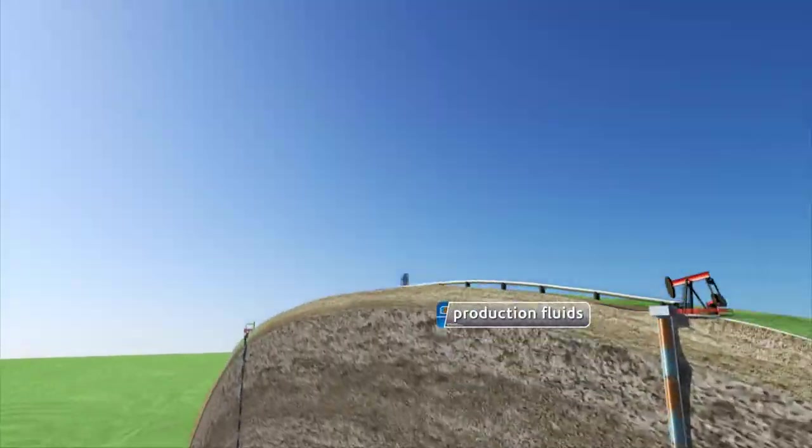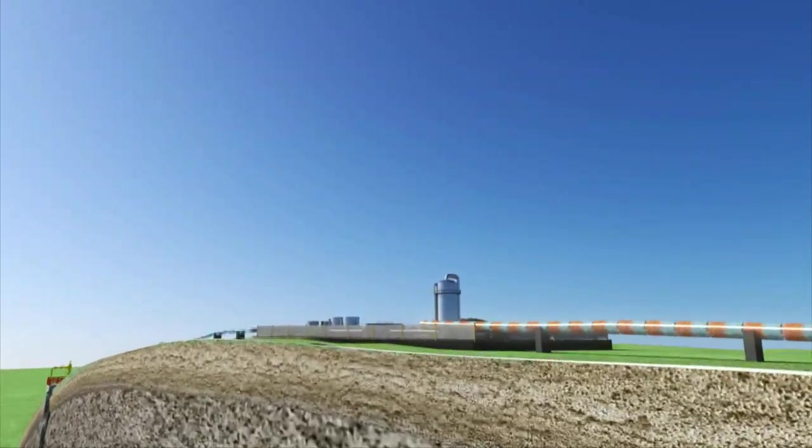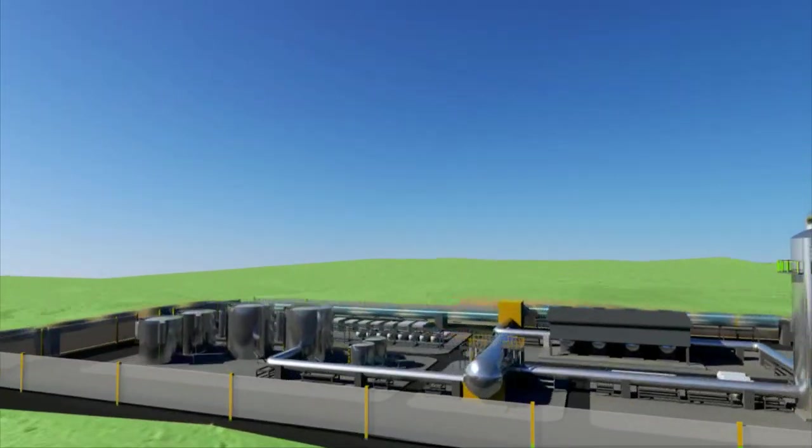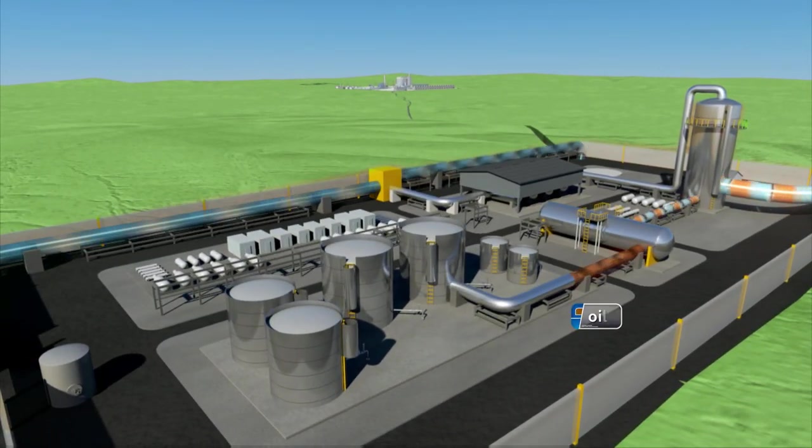As fluids and gases are produced from the well, they flow through a series of vessels that separate them at an enhanced separation facility. The oil is separated and stored in tanks prior to being delivered to market.